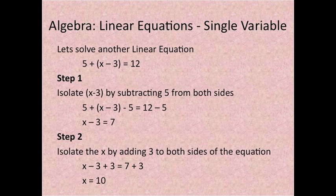Let's solve another linear equation: 5 plus x minus 3 equals 12. Step 1: Isolate the x minus 3 because this is in parentheses and that extra number 5 you can subtract from both sides. So that's 5 plus x minus 3 minus 5 equals 12 minus 5. x minus 3 equals 7.